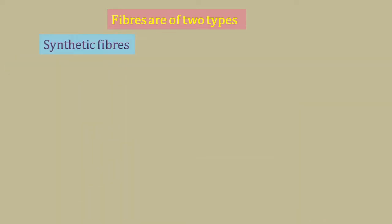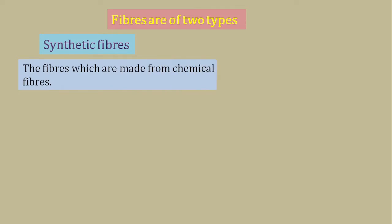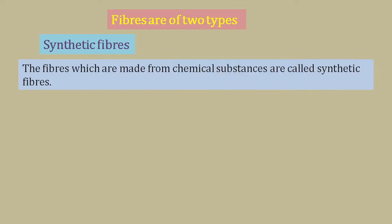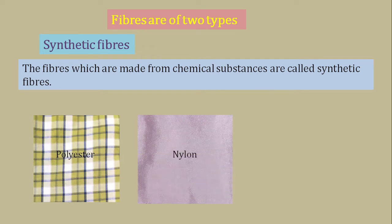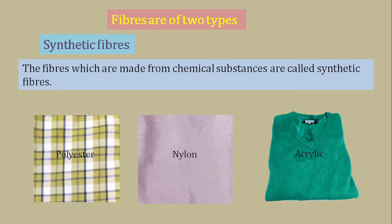Synthetic fibers are those fibers that are made from chemical substances. For example, polyester, nylon and acrylic are synthetic fibers.